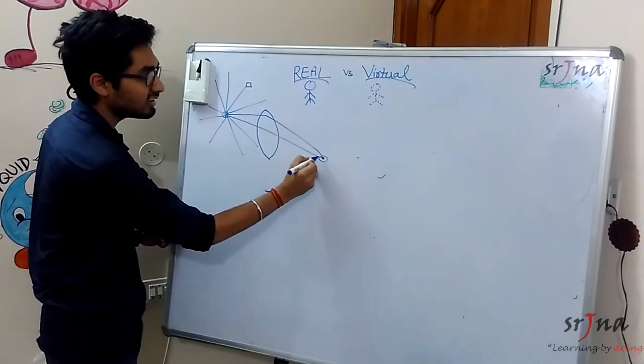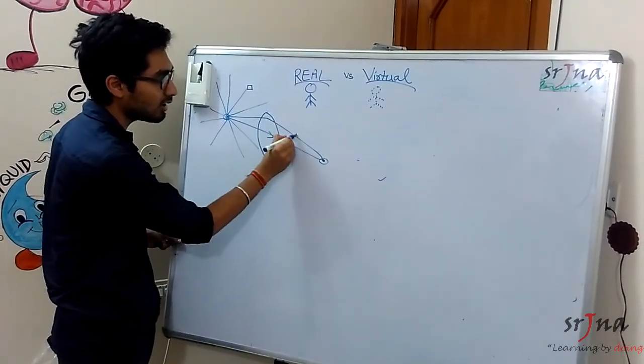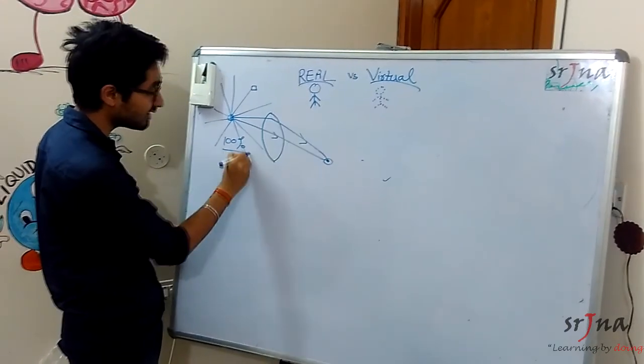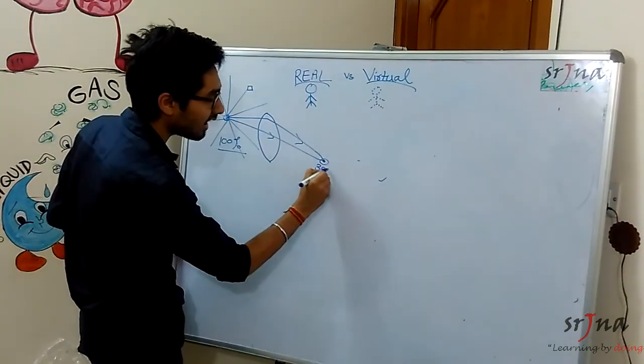So let's see here the points are actually meeting, the rays are actually meeting. Let's say about 100% of rays are emitting from this light source and 30% are meeting here.